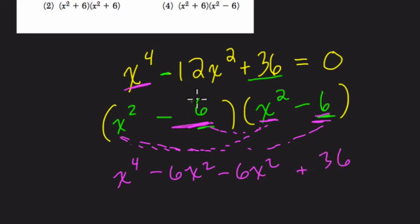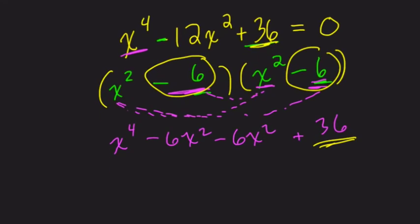So notice what just happened. We multiply these two numbers to get positive 36. So that's why when you pick those two numbers, they have to multiply to positive 36. And here they have to add to negative 12 because in the next step, when we combine these two terms, we do get our middle term, which is negative 12x squared. So they have to also add to the coefficient negative 12 of our trinomial.